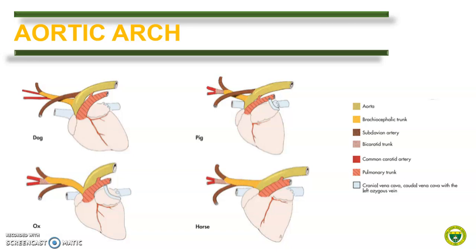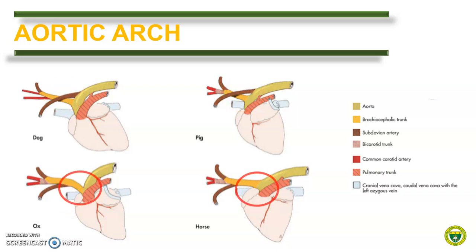Animals also vary in the branches of the aortic arc. The aortic arc is one of the three parts of the aorta, which include the ascending aorta, the aortic arc, and the descending aorta. At the aortic arc, two major arteries arise: the brachiocephalic trunk and the left subclavian artery. This pattern is true in dogs and in pigs. In contrast, in ruminants and horses, only the brachiocephalic trunk arises from the aortic arc, and the left subclavian artery arises from the brachiocephalic trunk.